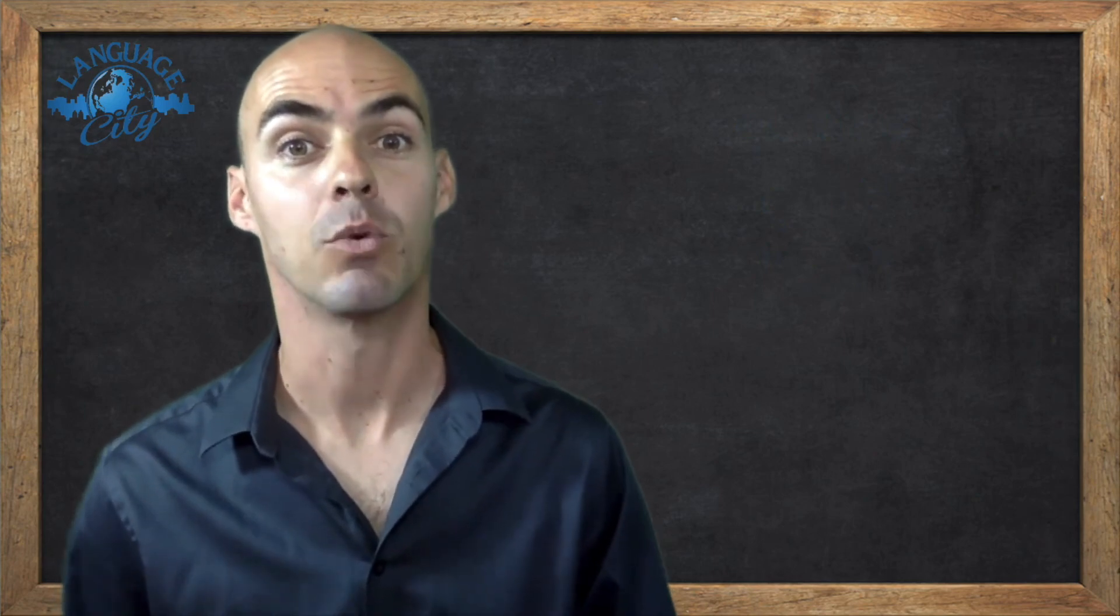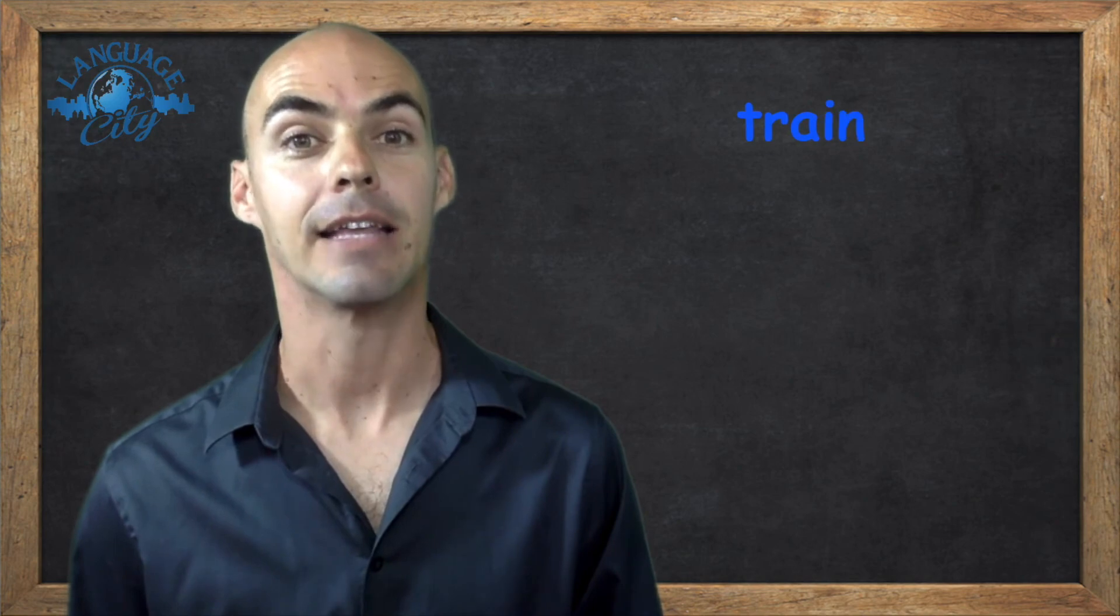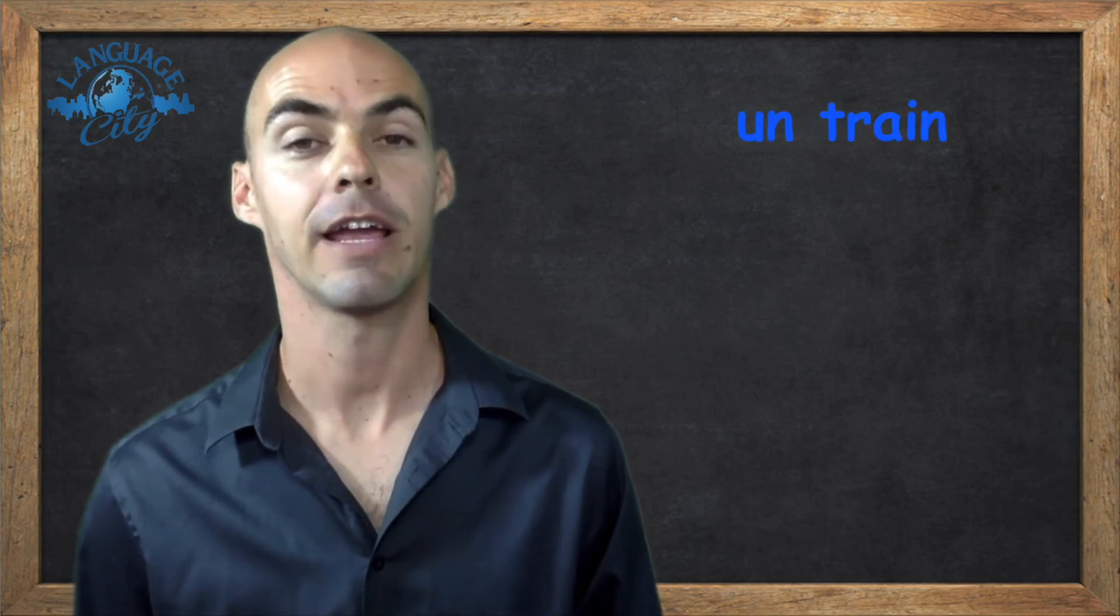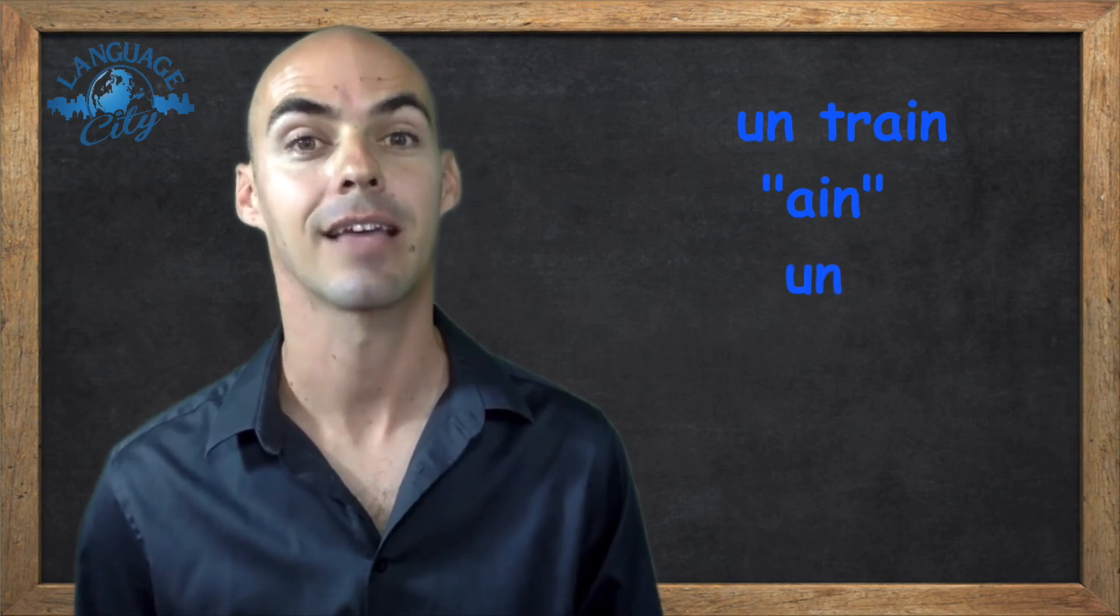And finally number ten was T, R, A, I, N. Un train, a train. Remember A, I, N is pronounced un, like un, number one. Un train.